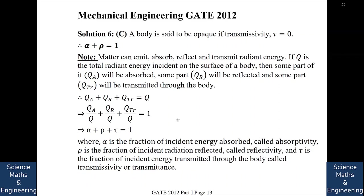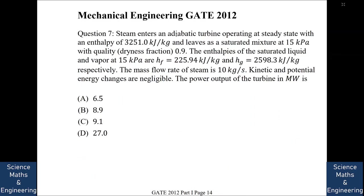Steam enters an adiabatic turbine operating at steady state with an enthalpy of 3251.0 kJ/kg and leaves as a saturated mixture at 15 kPa. The values of hf and hg are given along with mass flow rate. Neglecting kinetic and potential energy changes, we need to find the power output of the turbine.